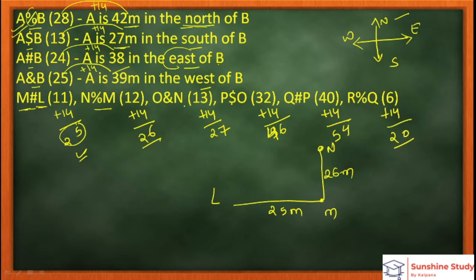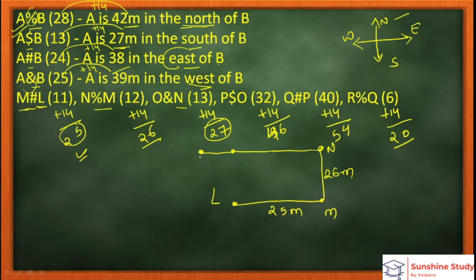Next: O and N. The N symbol here means West. A is West of B, so O is West of N. O goes to the West side. How far? 27 meters. Since the total up to here is 25, going 2 more gives us 27. So O is 27 meters from N.